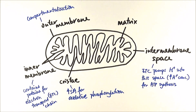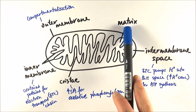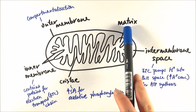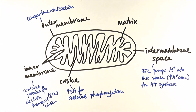Finally, we have the matrix, which is the liquid that fills the whole mitochondria. It's really important because two major parts of respiration occur here: the link reaction and the Krebs cycle. It contains the enzymes to catalyze those two reactions. Apart from that, it also contains mitochondrial DNA to actually make these enzymes for respiration.